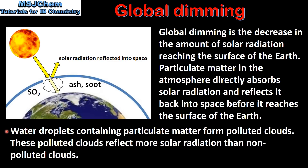Water droplets containing particulate matter can form polluted clouds. These polluted clouds reflect more solar radiation than non-polluted clouds. In this diagram we can see that particulate matter and polluted clouds reflect solar radiation back into space, reducing the amount of solar radiation that reaches the earth's surface, which is known as Global Dimming.